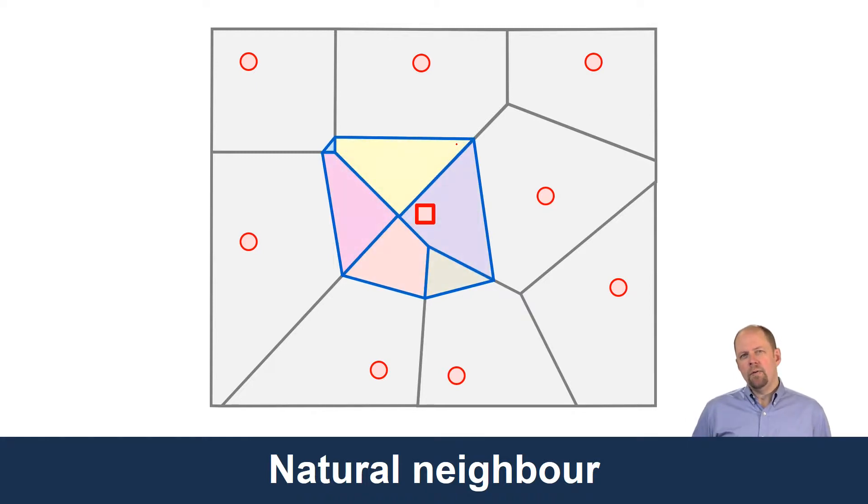So then it calculates the area of each of those new polygons and the proportion of the area of the new polygon to the old polygon. What do I mean by that?